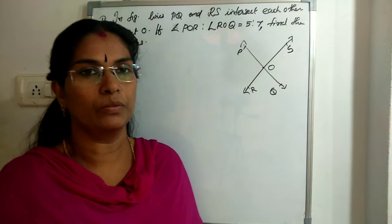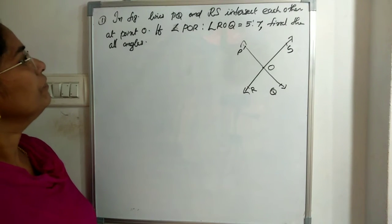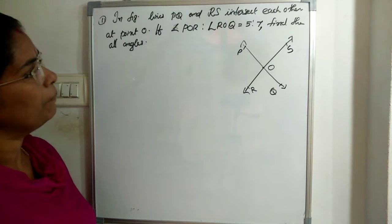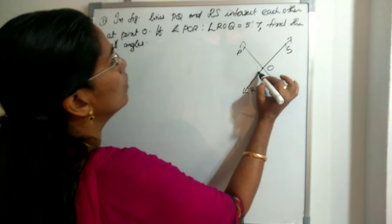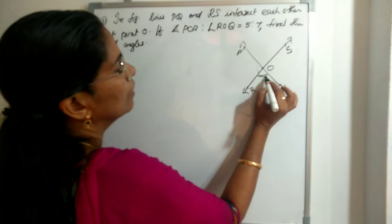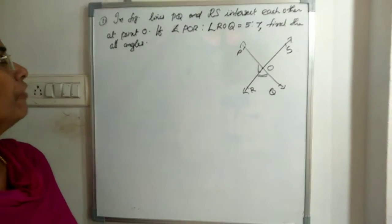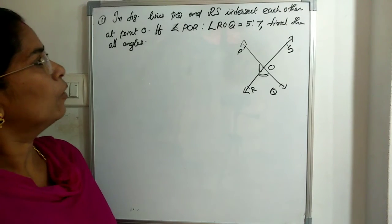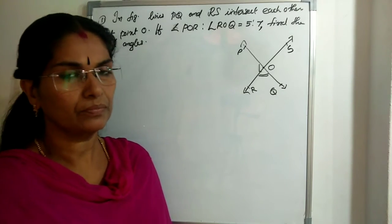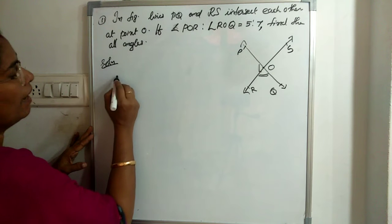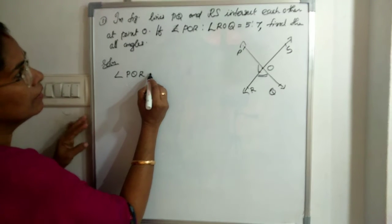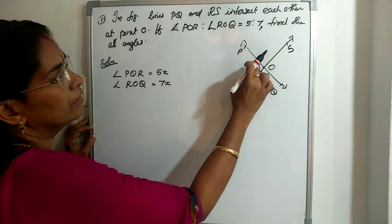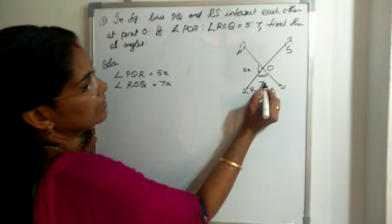Now we can solve one question. In the given figure, lines PQ and RS intersect each other at point O. Angle POR to angle ROQ is in the ratio 5 is to 7. We need to find all the angles. Given: angle POR to angle ROQ equals 5 to 7. So we take angle POR equal to 5x and angle ROQ equal to 7x.